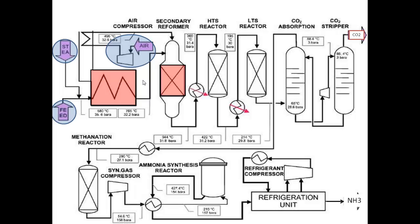Throughout the presentation, I want you to always track the changes in the process gas stream's composition to get a good grasp of what's taking place throughout the whole process. The process gas exits the secondary reformer at 980 degrees Celsius and a pressure around 35 bar, though that pressure depends on the technology used. This stream is mainly made up of hydrogen, nitrogen, CO, CO₂, and steam. Unfortunately, there is no process that could be used for direct CO removal, so we'll have to convert carbon monoxide to carbon dioxide, which will be absorbed in the CO₂ removal unit.